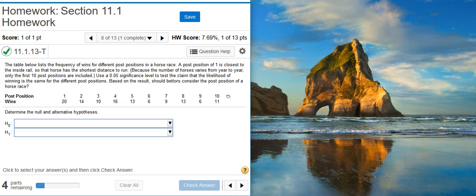Here's our problem statement. The table below lists the frequency of wins for different post positions in a horse race. A post position of one is closest to the inside rail so that horse has the shortest distance to run. Because the number of horses varies from year to year, only the first 10 post positions are included. Use a 5% significance level to test the claim that the likelihood of winning is the same for the different post positions.